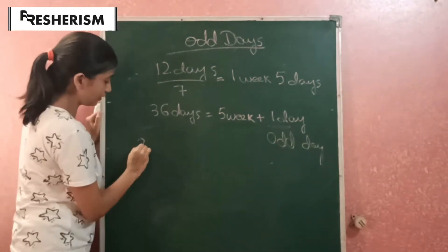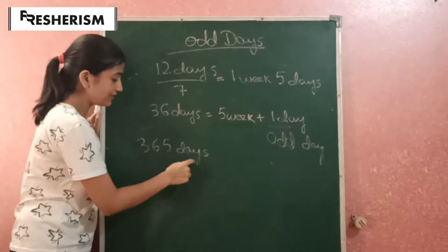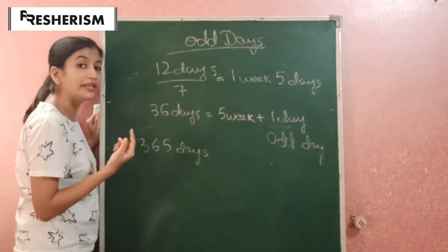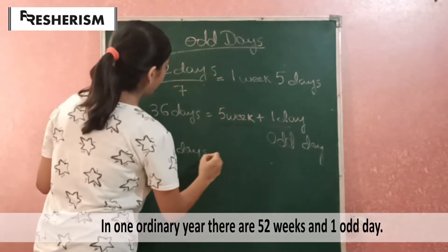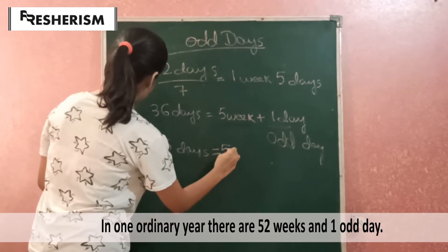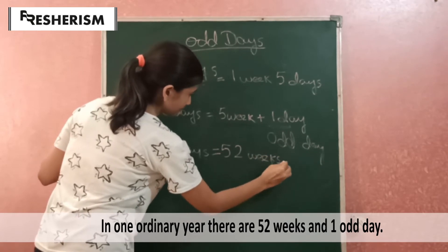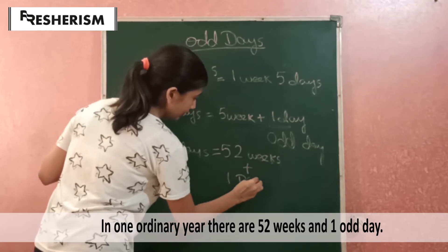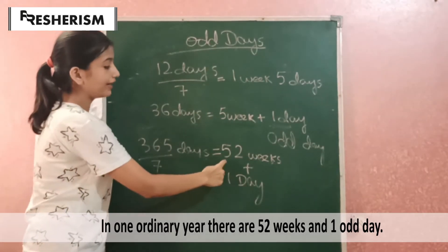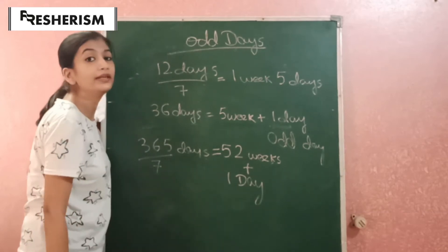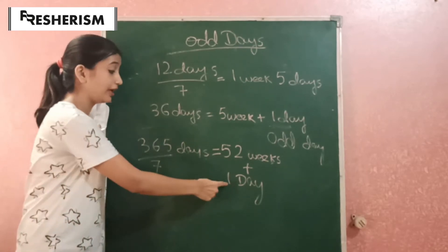Another example: 365 days, which equals 1 complete ordinary year. In 1 ordinary year, there are 52 weeks plus 1 day. We get this by dividing 365 by 7 — we get 52 weeks and 1 day, where 1 is the remainder. So we can say that in an ordinary year, there is only 1 odd day.